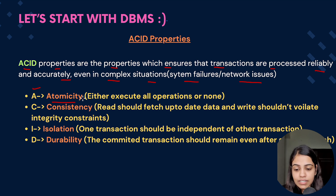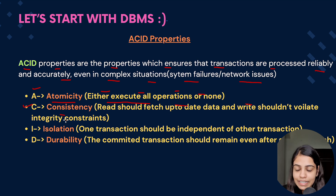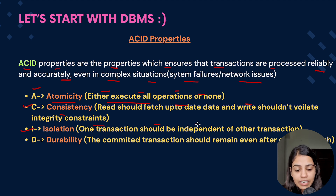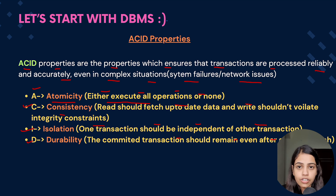Coming to the acronym ACID: A stands for Atomicity, which means either execute all the operations or none of the operations should be executed. C is Consistency, which says reads should fetch up-to-date data and writes shouldn't violate any integrity constraints. I is Isolation, so one transaction should be independent of other transactions. D is Durability, so committed transactions should remain even after a failure or crash.